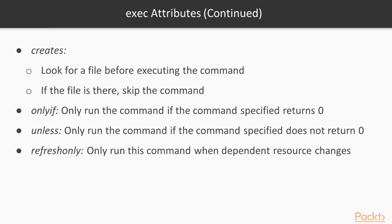How can we circumvent the command getting executed on every Puppet run? First of all, there is creates — this looks for a file before executing the command; if the file is there, it skips the command. Then there is only if — only run the command if the command specified returns 0. And as the opposite, unless — only run the command if the command specified does not return 0. Finally, there is refresh only — only run this command when the dependent resources change; this also requires a subscribe.